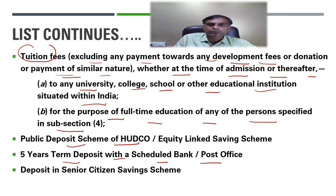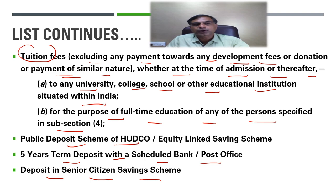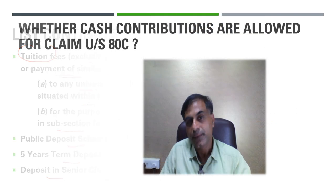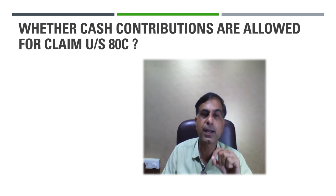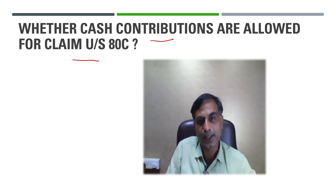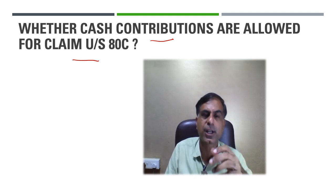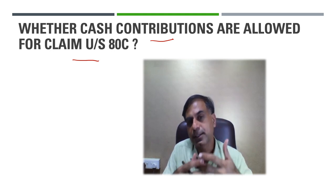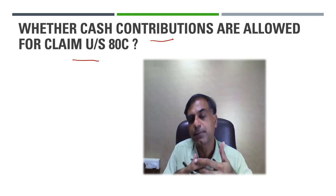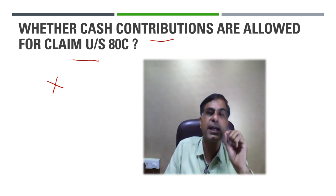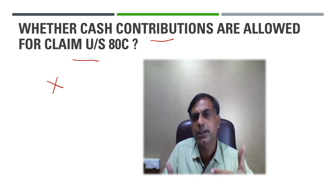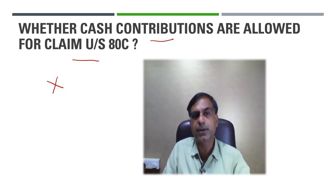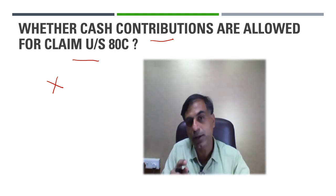Public deposit scheme of HUDCO, 5-year term deposit with a scheduled bank or post office, and deposit in Senior Citizen Saving Scheme are also allowable under Section 80C. Also, contributions to Sukanya Samridhi Yojana are allowed under Section 80C. Regarding whether cash contributions are allowed: unlike Section 80G which restricts cash contributions above ₹2,000, there is no such restriction under Section 80C. So if you paid an LIC premium of ₹25,000 in cash, you can still claim the Section 80C deduction.